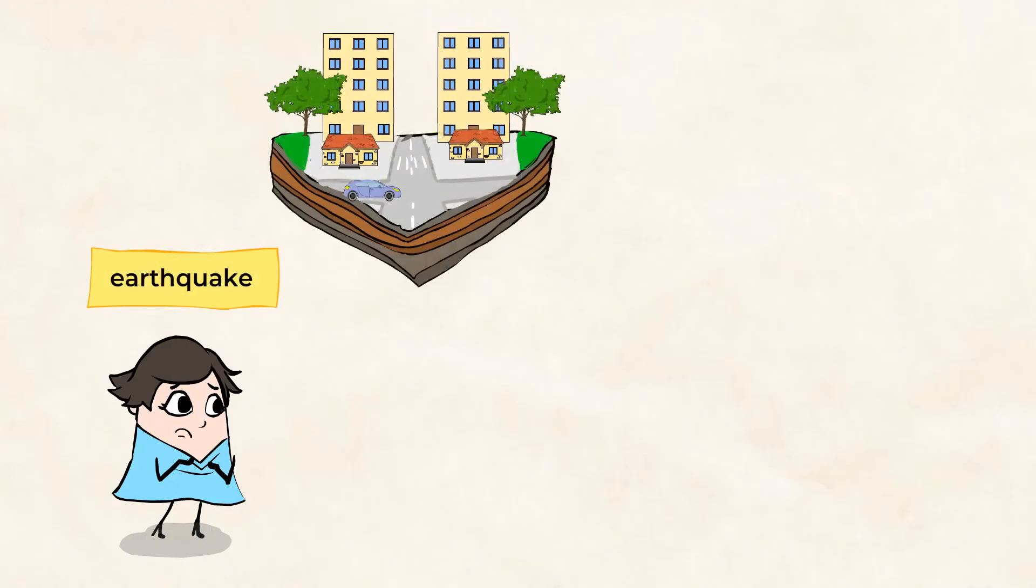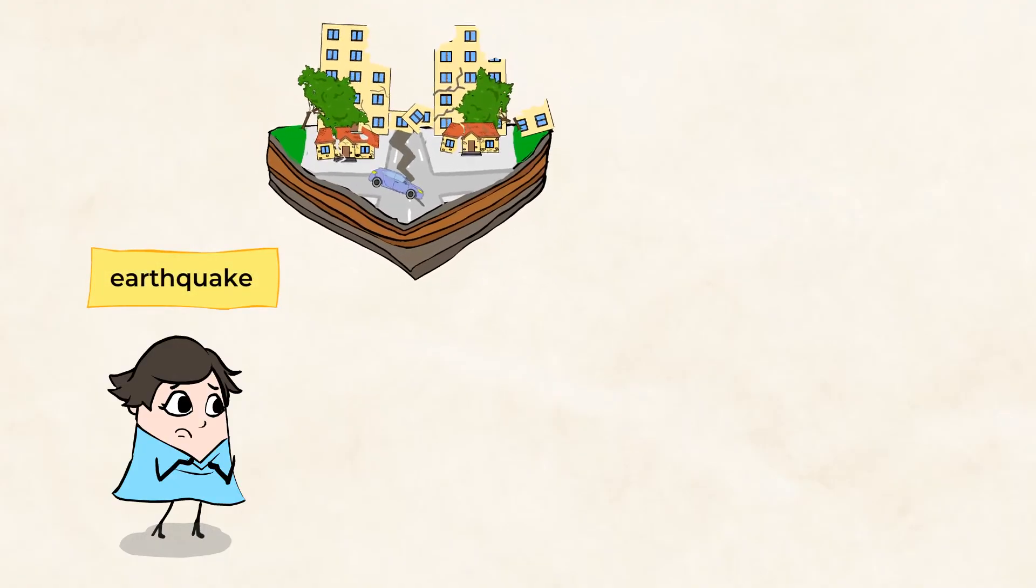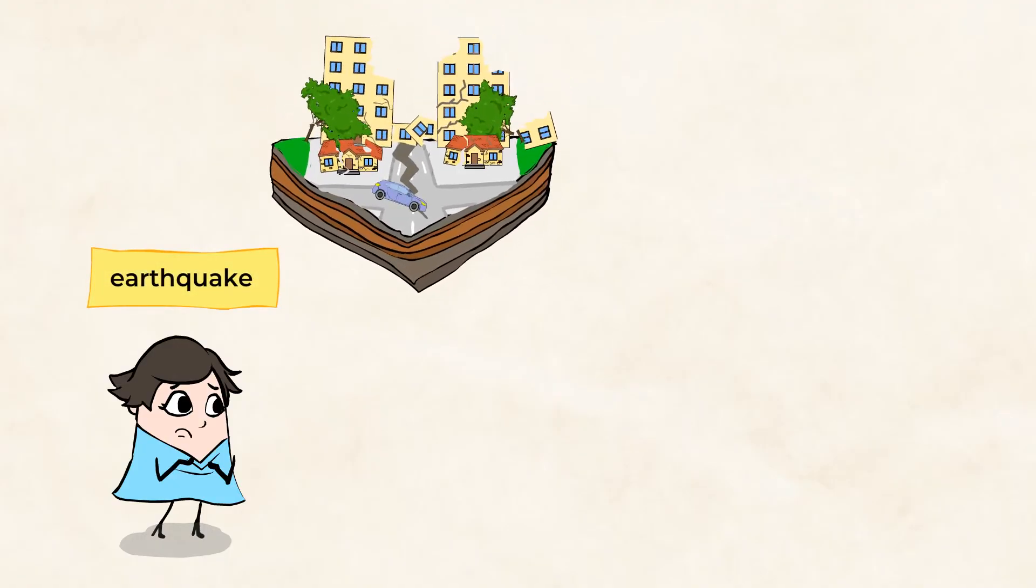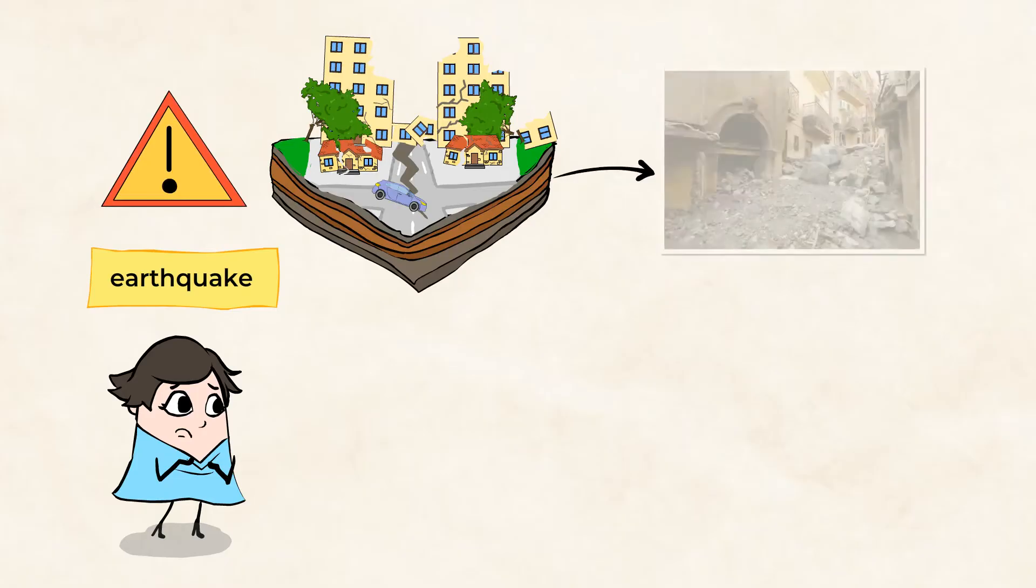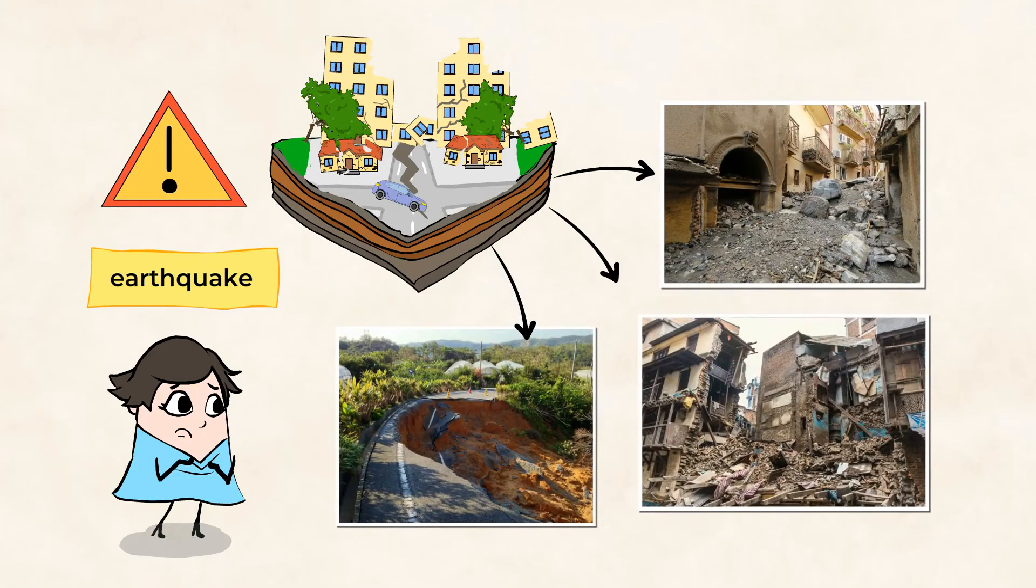Earthquakes are another example of natural events that can cause major damage for us humans. Similar to volcanoes, when a severe earthquake occurs, buildings, bridges, and homes can be destroyed.